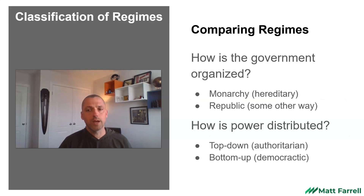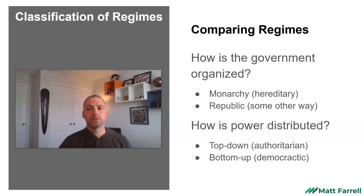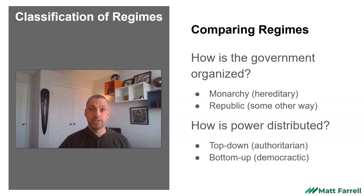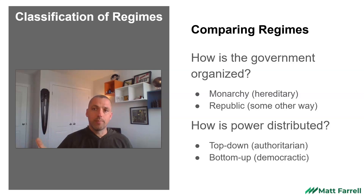How do we compare regimes? When we talk about classifying different regimes we're referring to how the government is organized. Is it a hereditary monarchy or a presidential republic? Those would be two different types of regimes. Also, how is the power distributed? Is it authoritarian, top-down and controlled by a military group or authoritarian leader? Or is it bottom-up, allowing for democratic public participation?